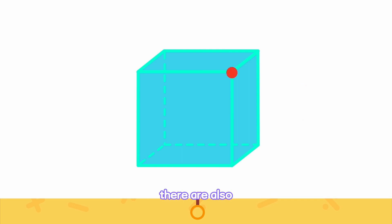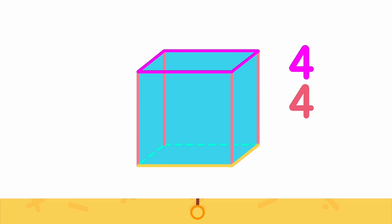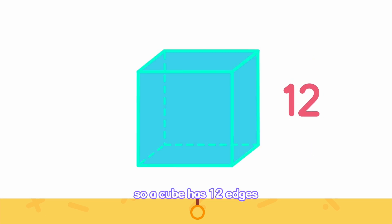There are also edges on the cube. How many edges are there on a cube? Let's count from top to bottom. Four edges on the top, four in the middle, and four on the bottom. So a cube has 12 edges.